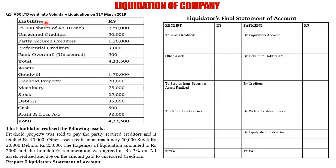ABC Limited went into voluntary liquidation on 31st March 2019. The list of liabilities given includes equity shares, unsecured creditors, partly secured creditors, preferential creditors, and bank overdraft (unsecured), totaling Rs. 4,23,500. Assets include goodwill, property, machinery, stock, debtors, cash, and P&L account.